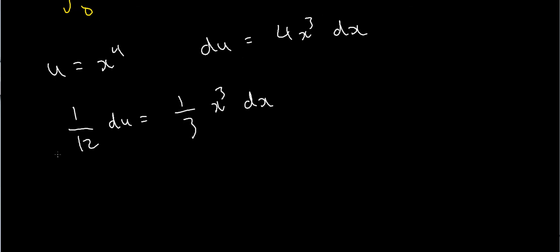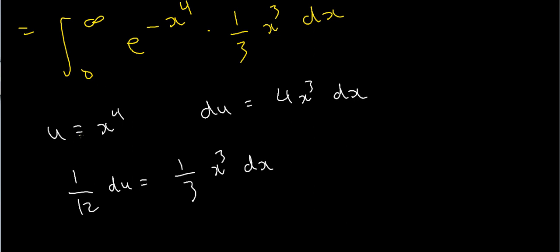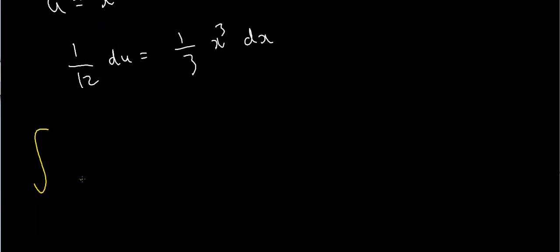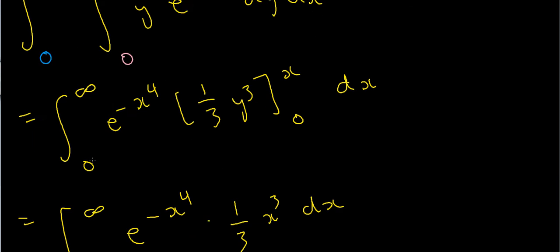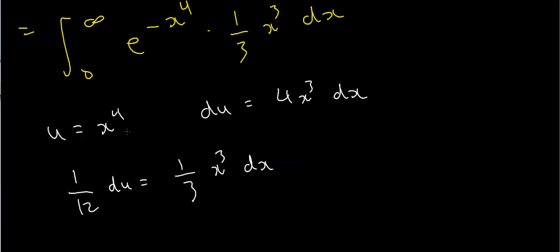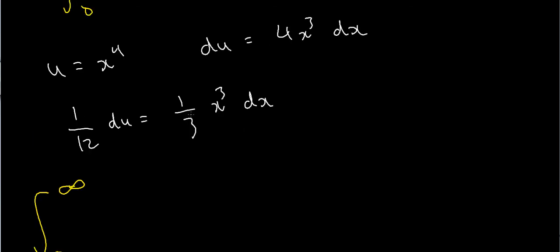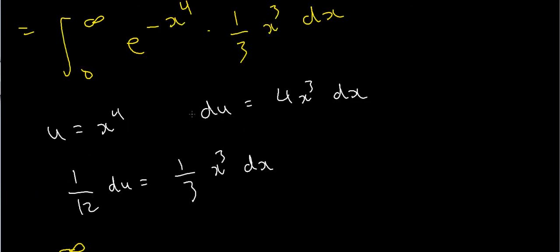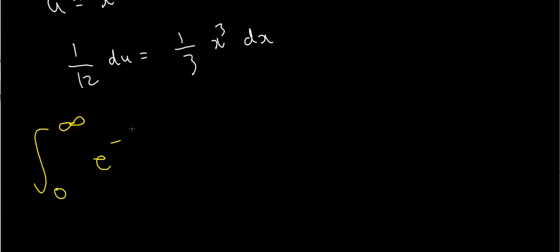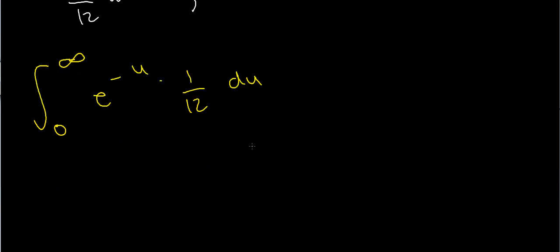The new integral has limits: when x equals 0, u equals 0, so the lower limit is 0; when x goes to infinity, u goes to infinity, so the upper limit is infinity. The function e to the minus x to the 4 becomes e to the minus u. So the integral becomes e to the minus u times one twelfth du.